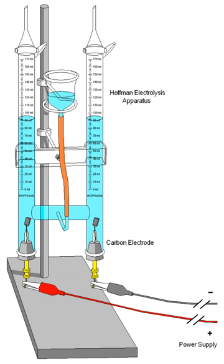In 1785, Martinus van Marum's electrostatic generator was used to reduce tin, zinc, and antimony from their salts using electrolysis. In 1800, William Nicholson and Anthony Carlisle, as well as Johann Ritter, decomposed water into hydrogen and oxygen. In 1808, potassium, sodium, barium, calcium, and magnesium were discovered by Sir Humphry Davy using electrolysis.